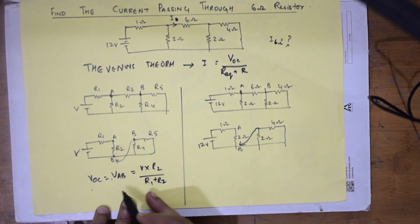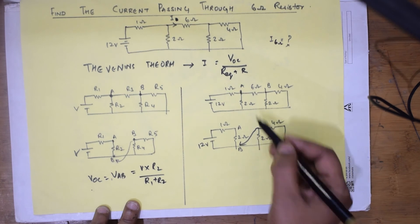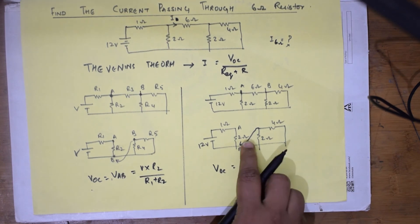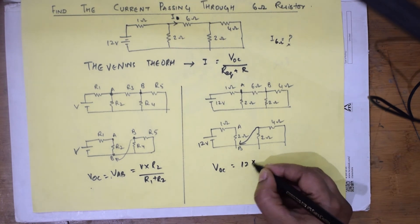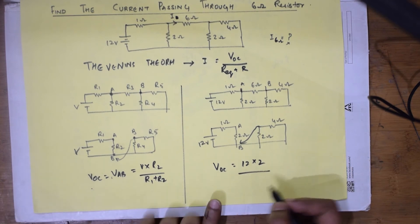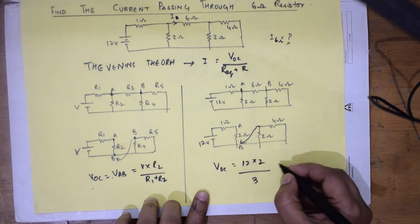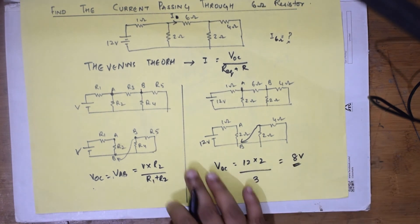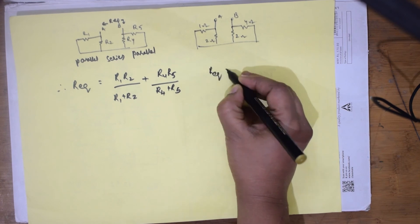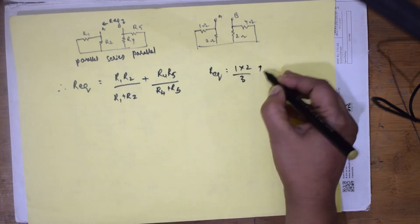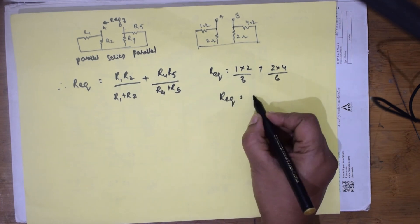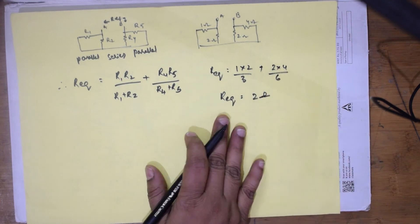Now let us apply the values to the given circuit. For VOC: V = 12V, R2 = 2Ω, R1 + R2 = 3Ω, so VOC = 12 × 2/3 = 8 volts. For R_eq: substituting R1=1, R2=2, R4=2, R5=4 gives R_eq = (1×2)/3 + (2×4)/6 = 2/3 + 4/3 = 2 ohms.